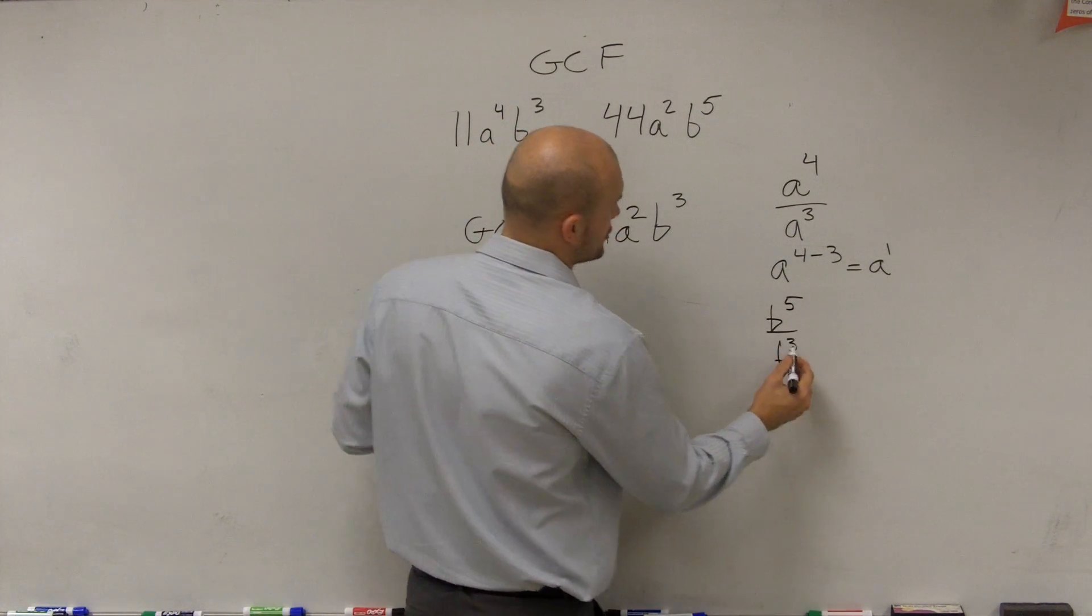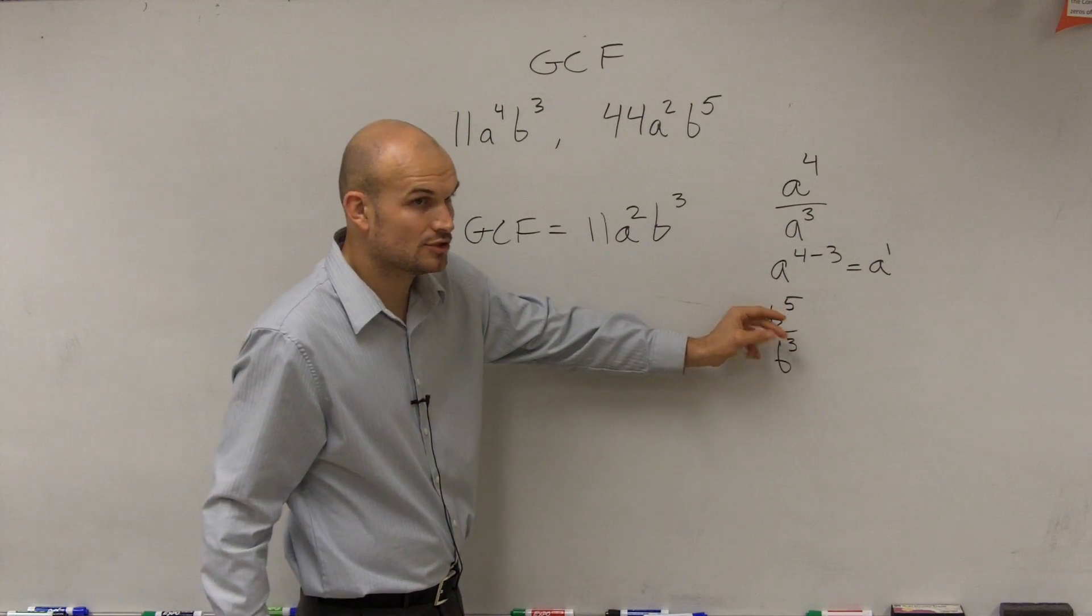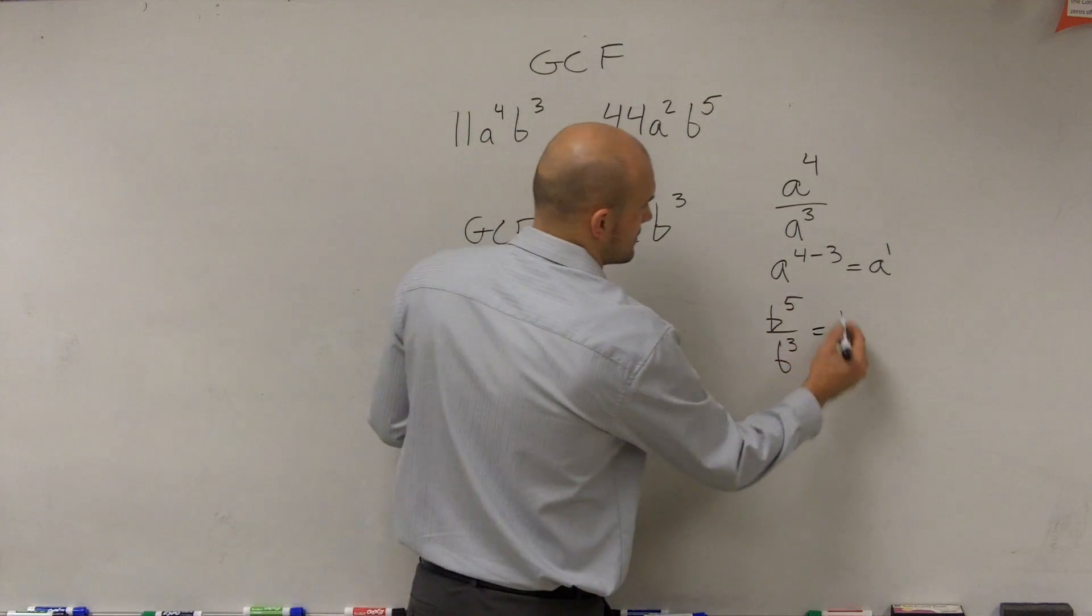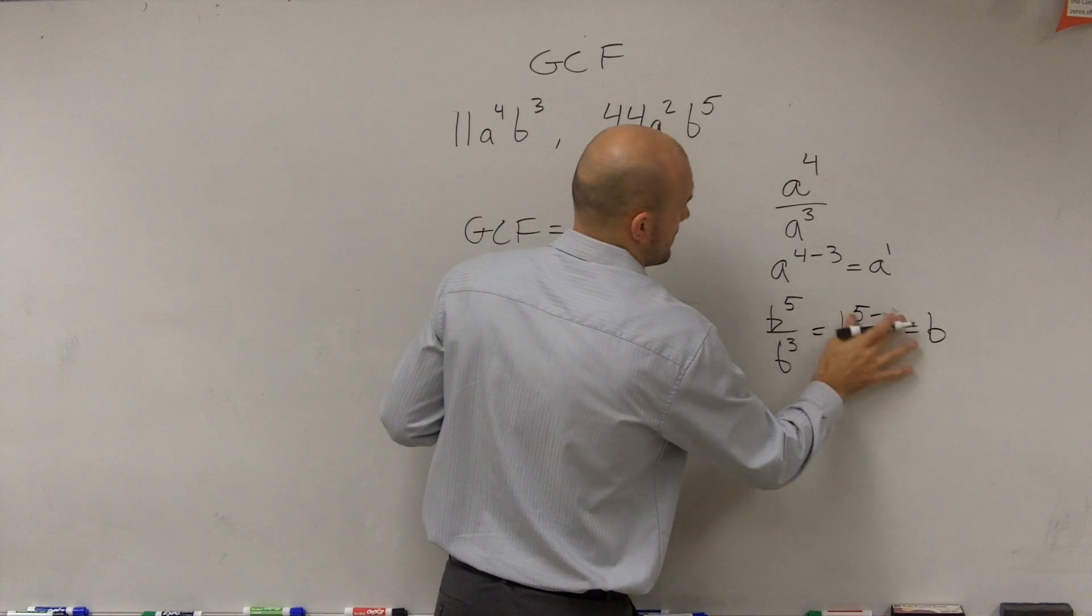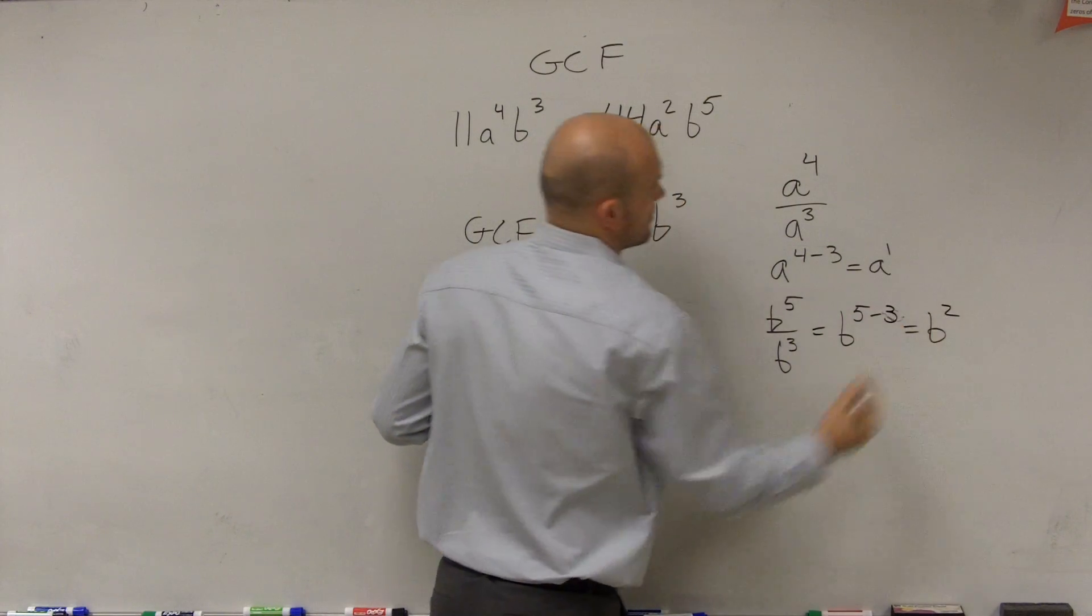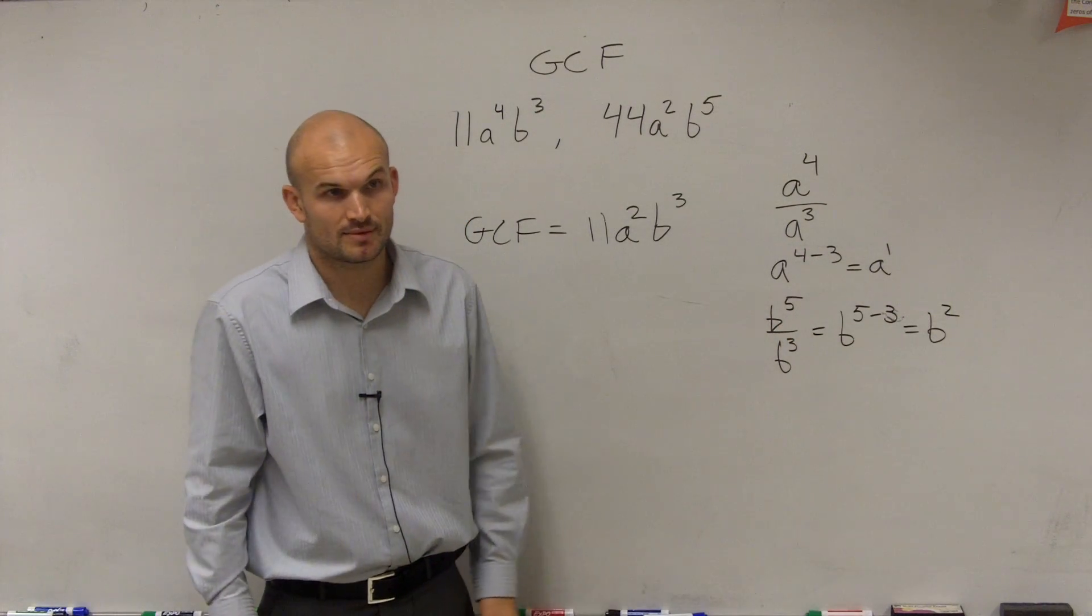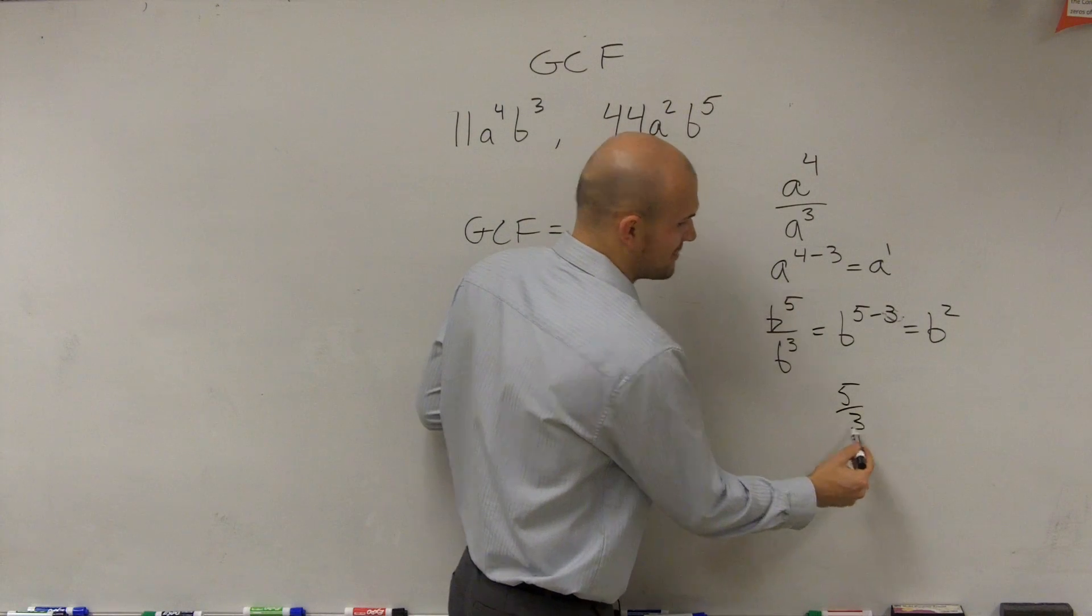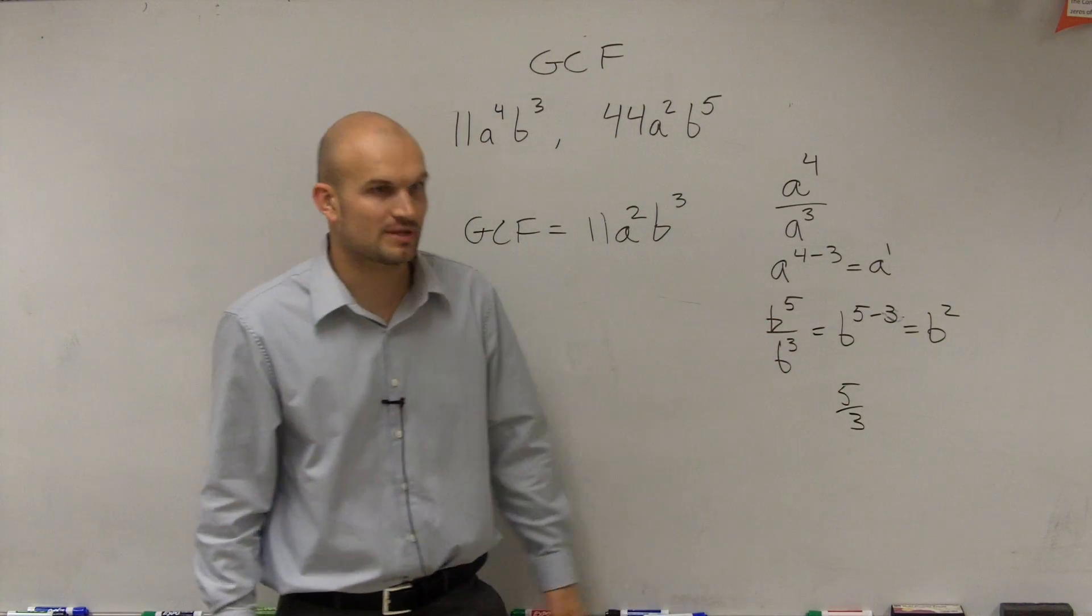b divided by b cubed. Remember, when you have exponents, you don't divide the exponents into the other exponent. You subtract, so yes, b to the fifth divided by b cubed is b squared. So b squared would be? It's different than five divided by three. You're not dividing three into five. You subtract the exponents when you divide.